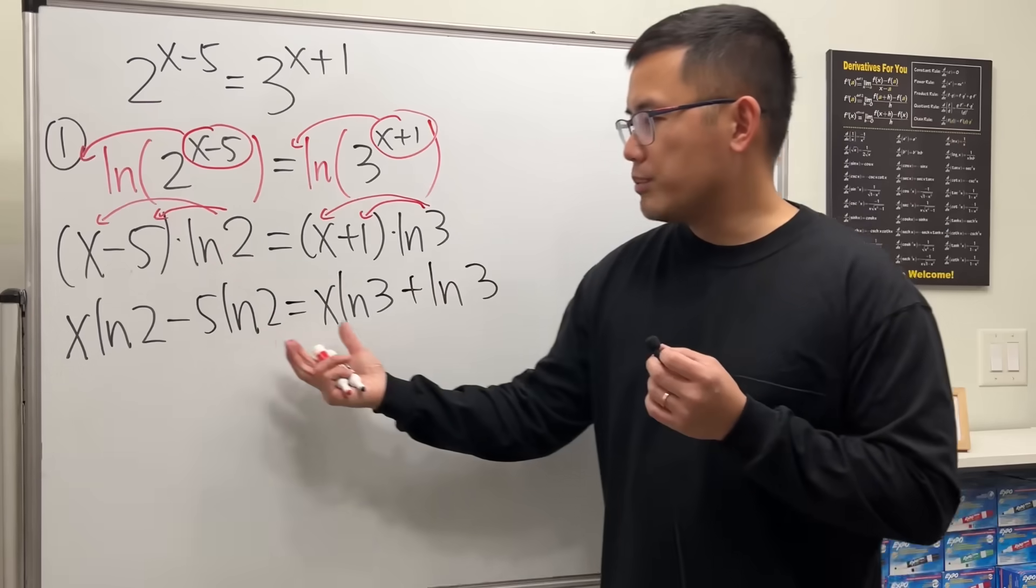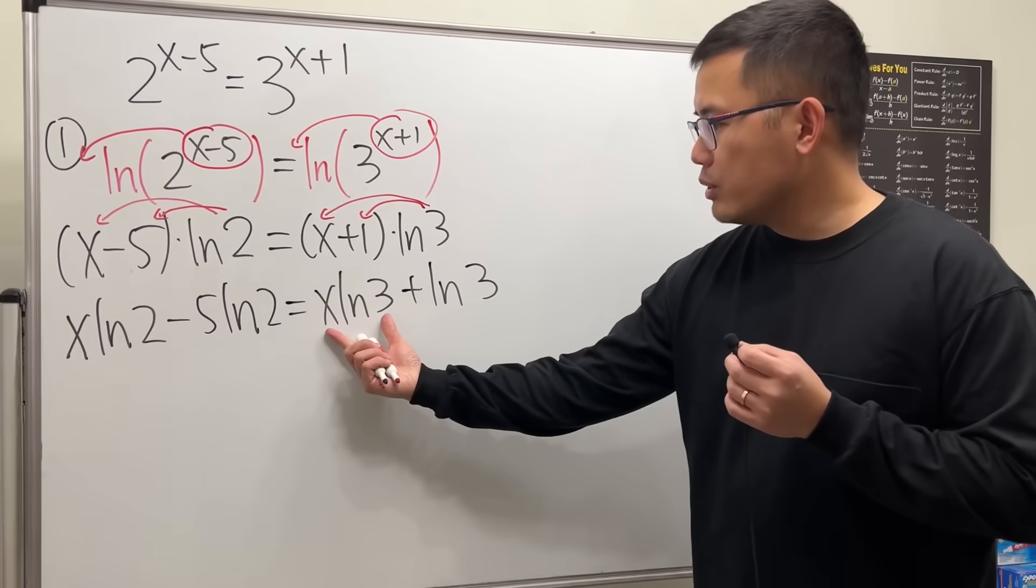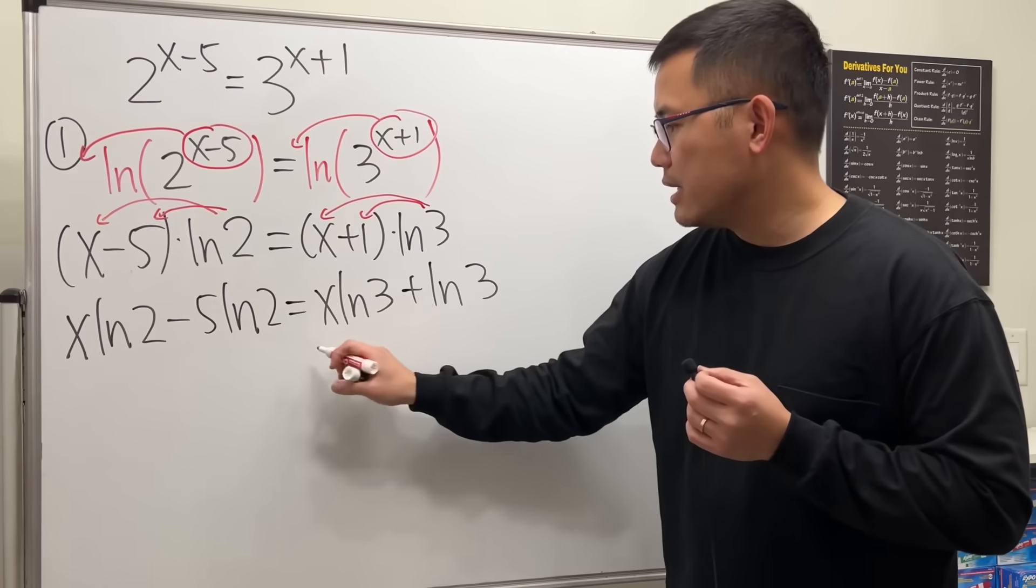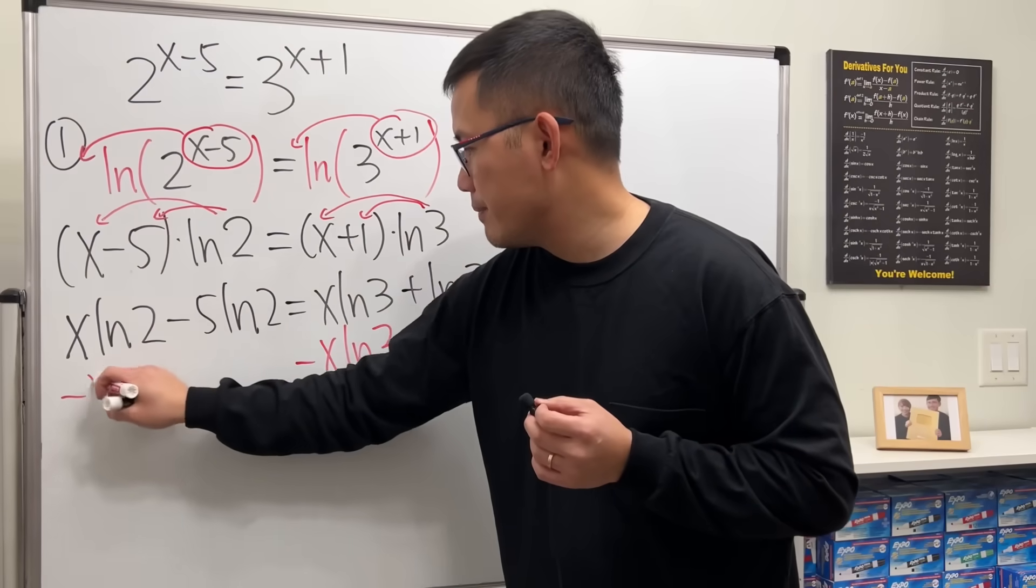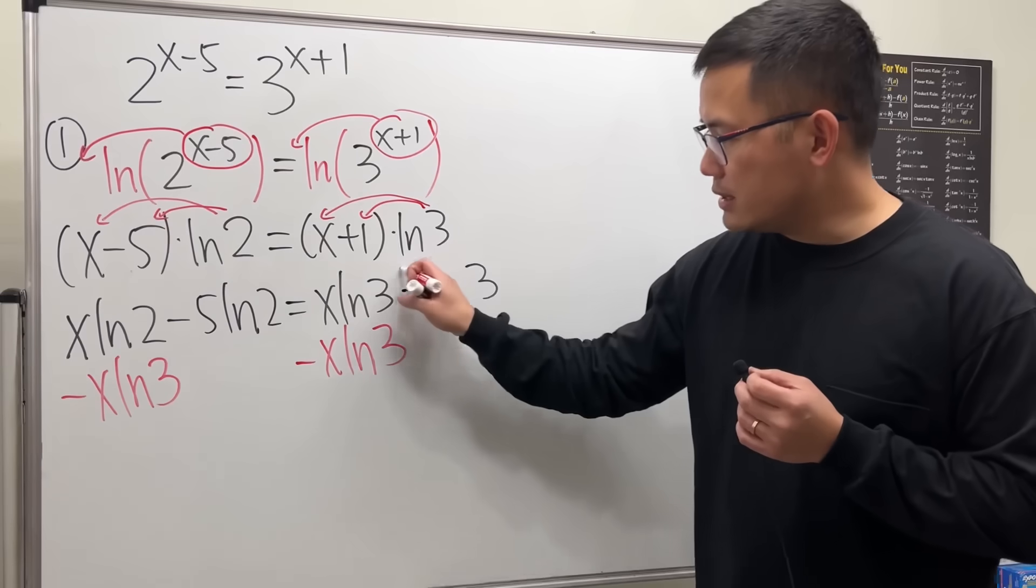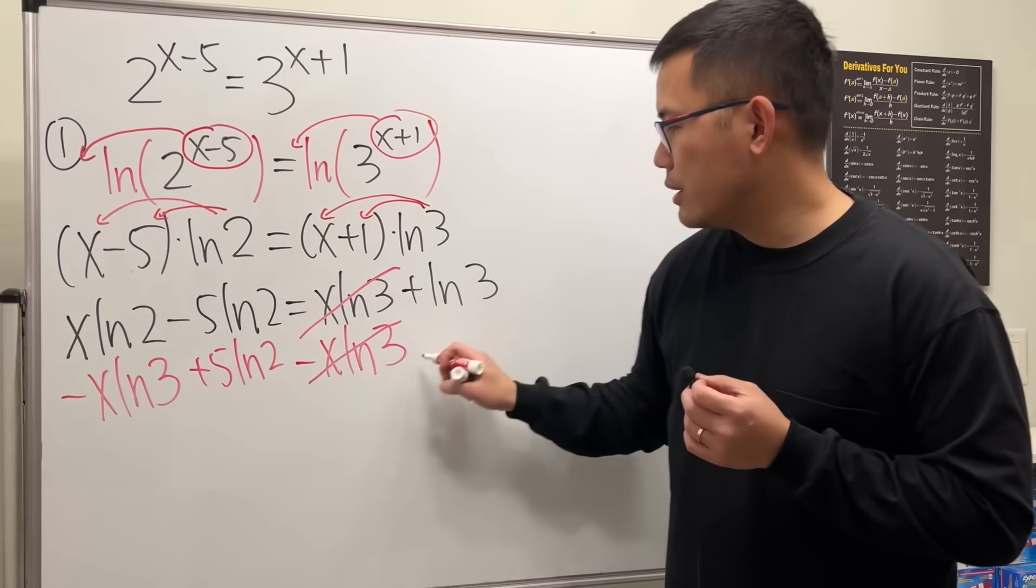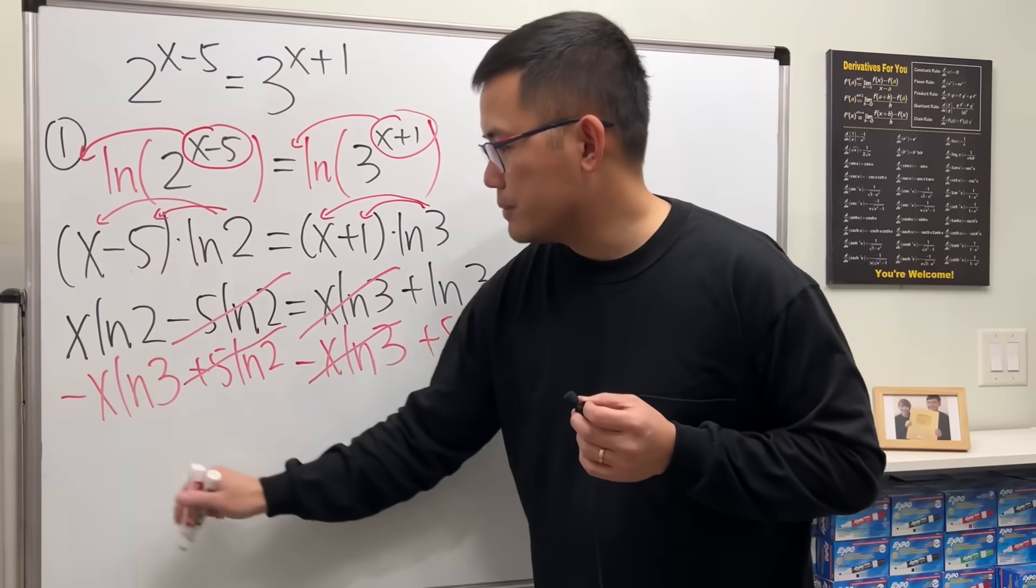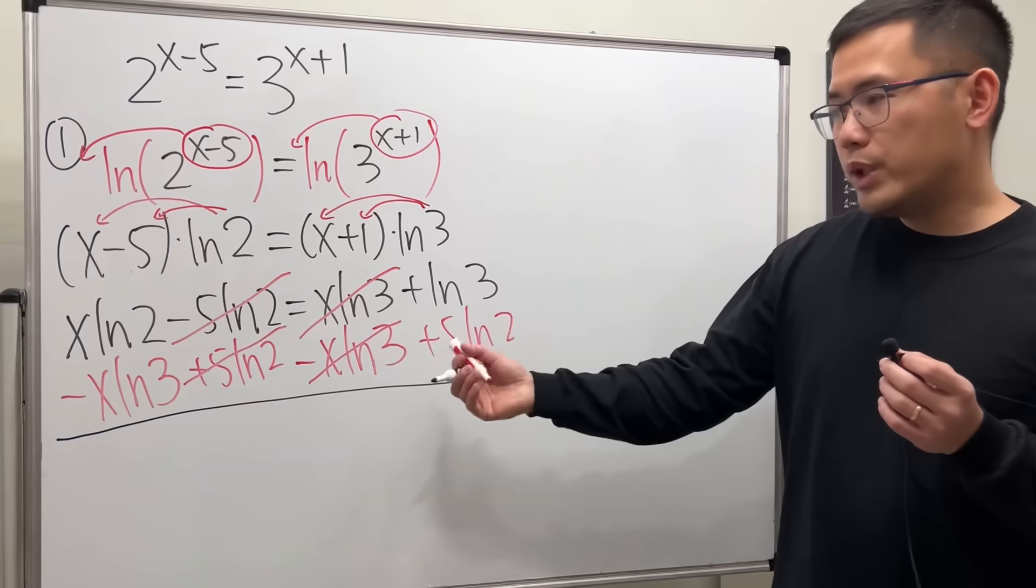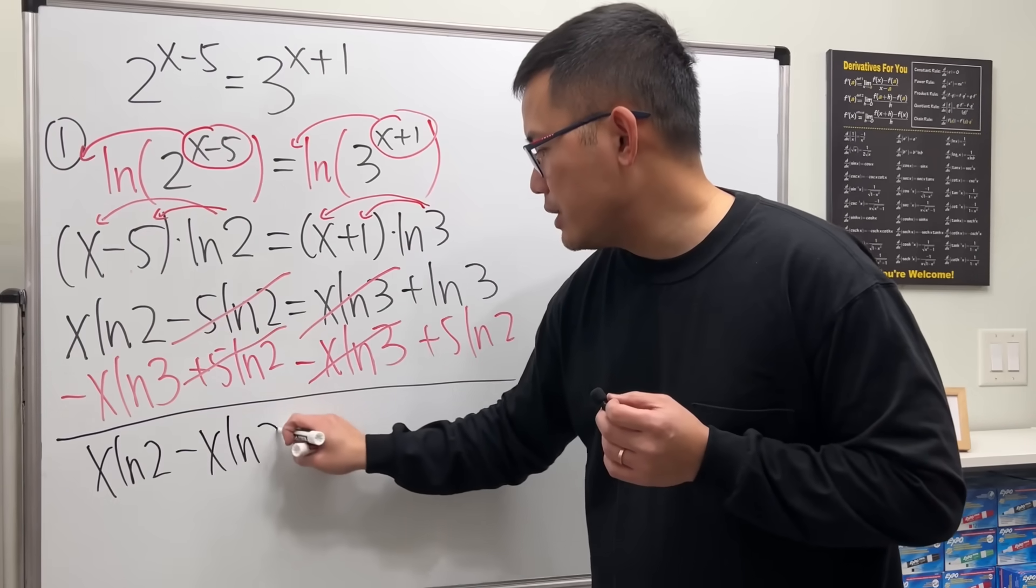Now as always, we are going to put down all the x's on one side and the number on the other side. I'm going to move this to the other side by subtracting x ln 3. And of course we do them on both sides. So this and that cancel. Then plus 5 ln 2. Plus 5 ln 2. This and that cancel. So we get x times ln 2 minus x ln 3.